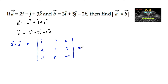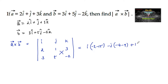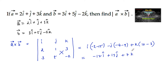Finding the determinant: i times (negative 2 minus 15), minus j times (negative 4 minus 9), plus k times (10 minus 3). So we get negative 17i, minus of minus 13, which is plus 13j, and 10 minus 3 gives 7k.